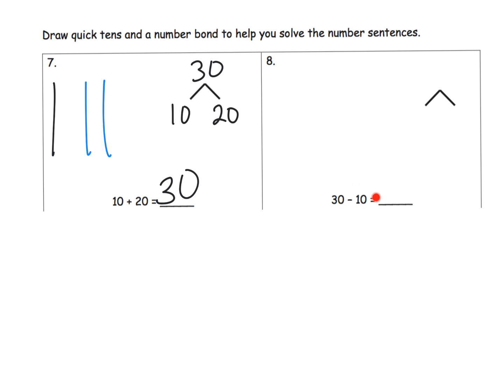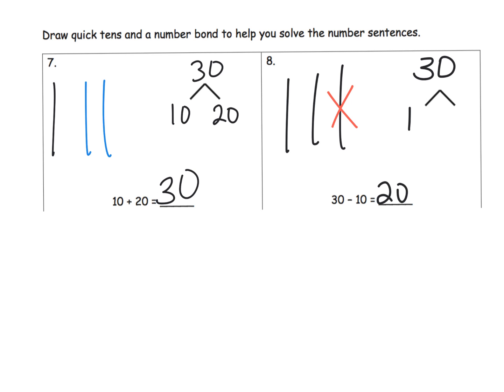Now it's subtraction. Our quick 10s will start with three 10s, then we cross off one of those 10s. We can immediately see that the answer is two 10s, or 20. So our number bond is going to look like 30 at the top, and then a 10 and a 20.